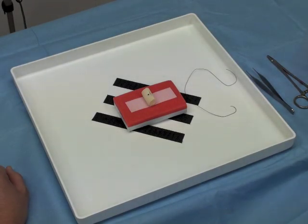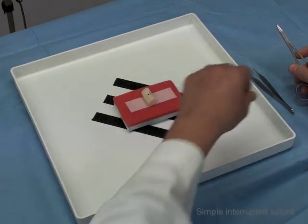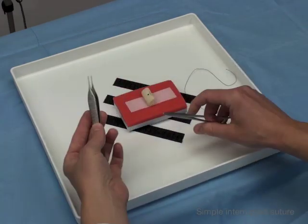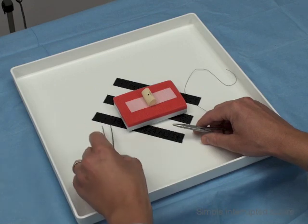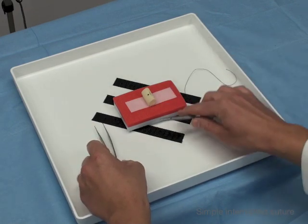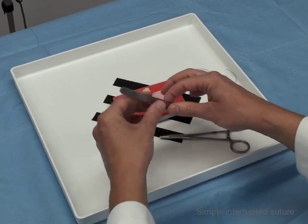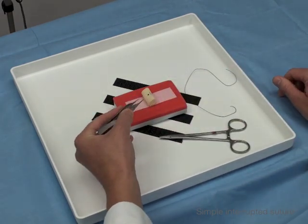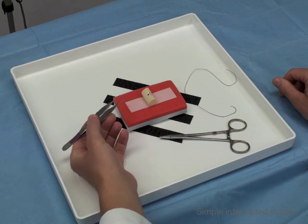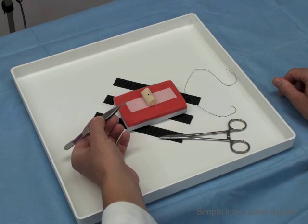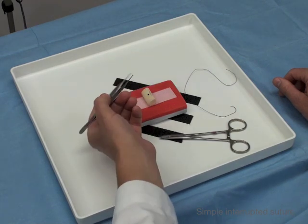Now we're going to do an interrupted suture using instruments. We're going to have two instruments: one is your pickup and the other one is your needle driver. The pickup should be held like a pencil, not like this but like a pencil. This is an Adson, it's got sharp teeth. This is usually used for skin.